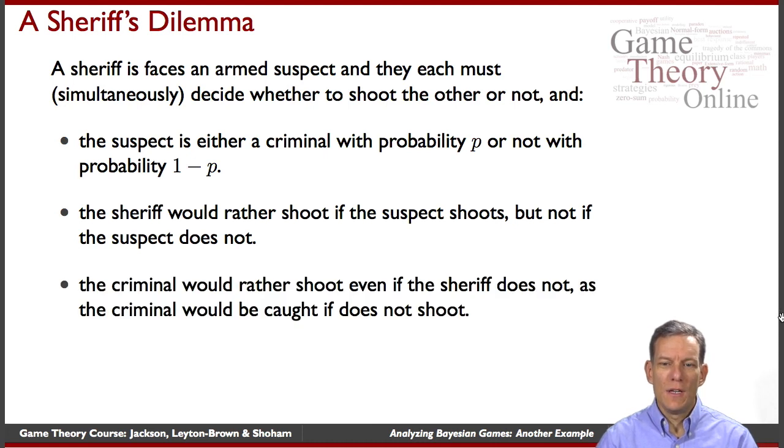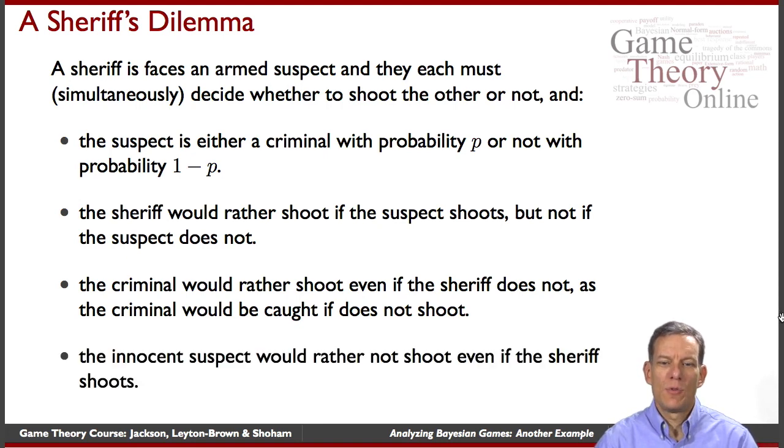The sheriff would rather not shoot if the suspect doesn't but will defend themselves if shot at. And the criminal would rather shoot even if the sheriff does not. This is a situation where they realize they're gonna be caught if they don't shoot. And so they're gonna want to shoot. And the innocent suspect would rather not shoot even if the sheriff shoots at them because they realize if the sheriff ends up shooting they're gonna die. Maybe they'd rather not shoot and be remembered for shooting the sheriff. So that's the setting of the game very simply.